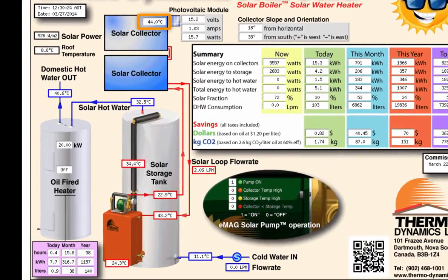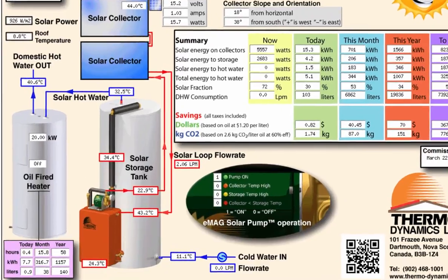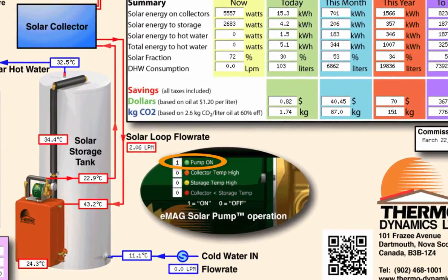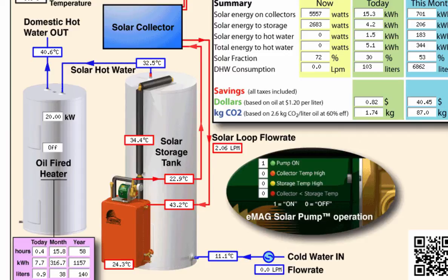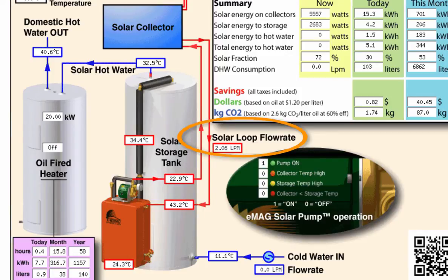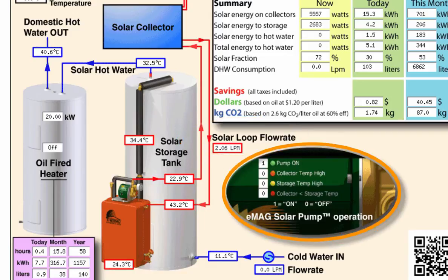When the collector temperature is hotter than the water at the bottom of the solar tank, as indicated here, the EMAG solar pump turns on and circulates heat transfer fluid from the solar collectors down to the heat exchanger inside the solar boiler module. The cooled heat transfer fluid then exits the solar boiler and returns to the solar collectors for reheating, continuing to recirculate through the solar loop as long as there is energy to be gained, as dictated by the EMAG solar pump controller.